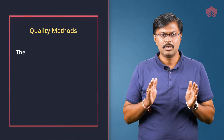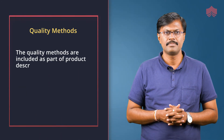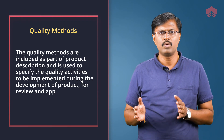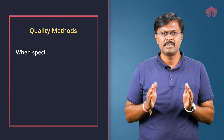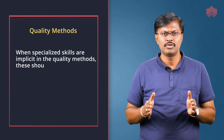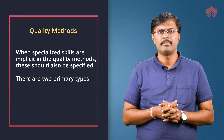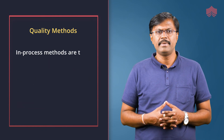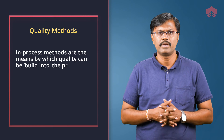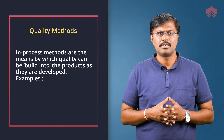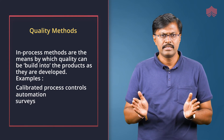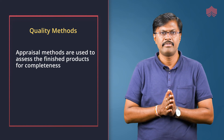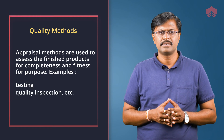Quality methods are included as part of product descriptions and are used to specify the quality activities to be implemented during the development of a product for review and approval of completion. When specialized skills are implicit in quality methods, these should also be specified. There are two primary types of quality methods: in-process methods and appraisal methods. In-process methods are the means by which quality can be built into the products as they are developed — for example, calibrated process controls, automation, surveys, consultation, etc. Appraisal methods are used to assess the finished products for completeness and fitness for purpose — for example, testing, quality inspection, etc.